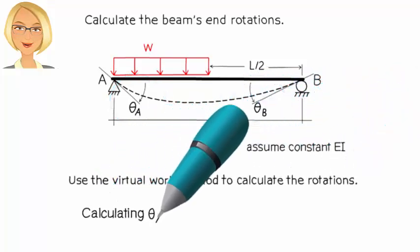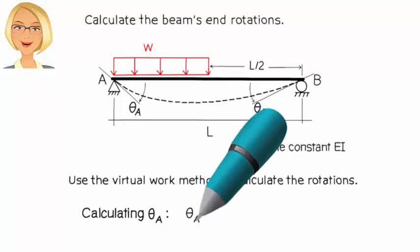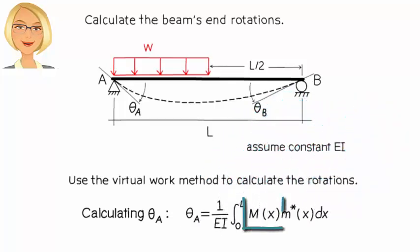According to this method, we can calculate theta A using this equation, where M(x) is the beam's bending moment equation due to the applied load, and M star x is the beam's bending moment equation due to a virtual unit moment placed at A in the assumed direction of rotation.